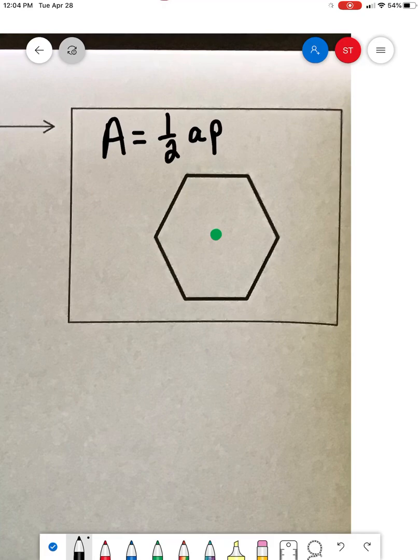a stands for, well, you don't know yet, and P, if you took a wild guess, you'd probably be right. It's the perimeter of the shape. So what is a?